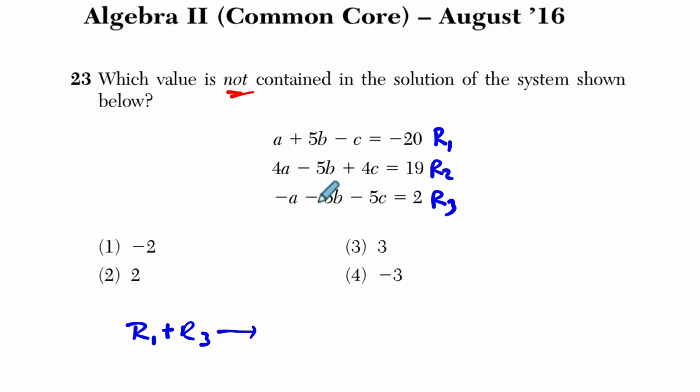And 5b and negative 5b, those are opposites too. Those cancel out. I get negative c plus negative 5c is negative 6c, equals negative 20 plus 2, which is negative 18. So just by adding those two equations, I get this equation.